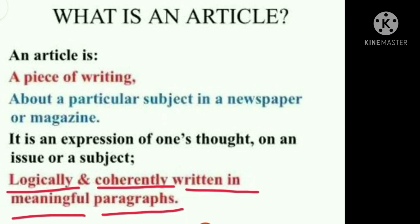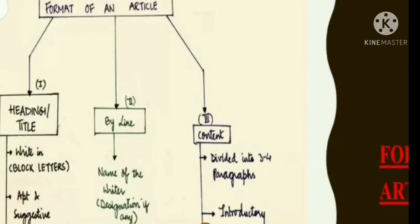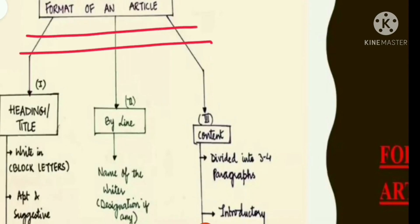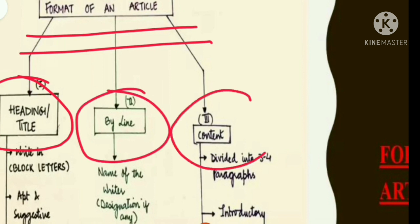An article should have some connection to the audience — then only it will be interesting. So whichever topic you get, you will try to relate it to the audience. Now let's talk about the format of an article. First we have to write the heading, then the byline, and then the content.